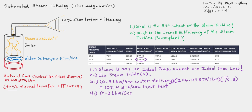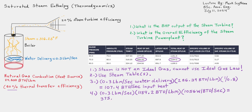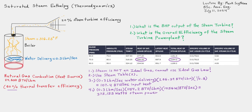Next, we multiply the 0.3 pounds per second water input delivery times the total heat of steam per pound of water — 1184.2 BTUs per pound — then multiply by 1056 watts per 1 BTU per second. The steam power output from the boiler to the steam turbine equals 375,155 watts of steam power.